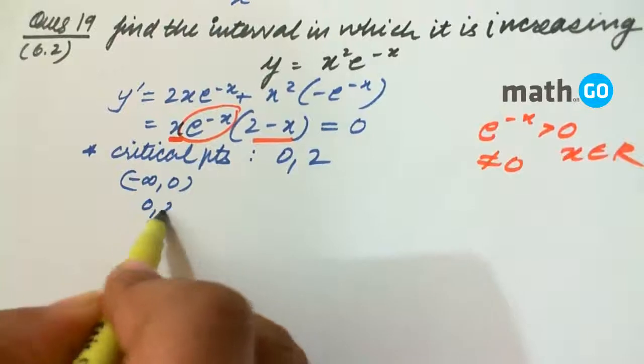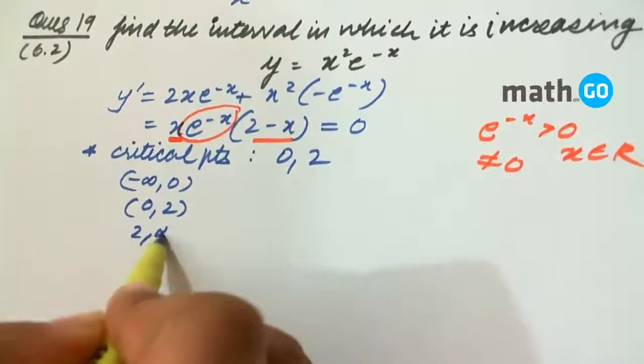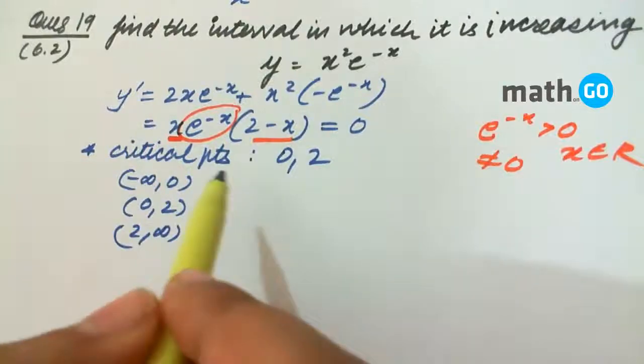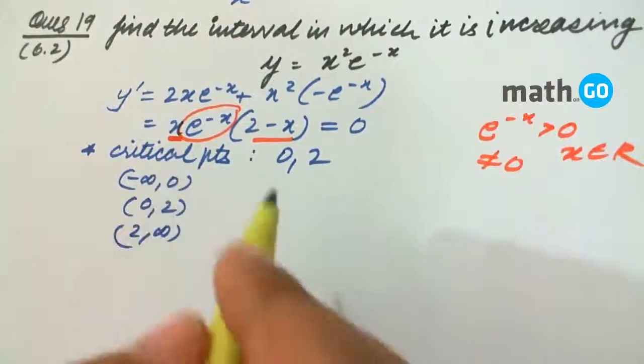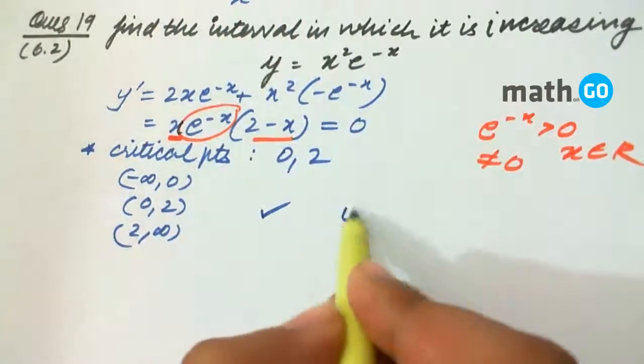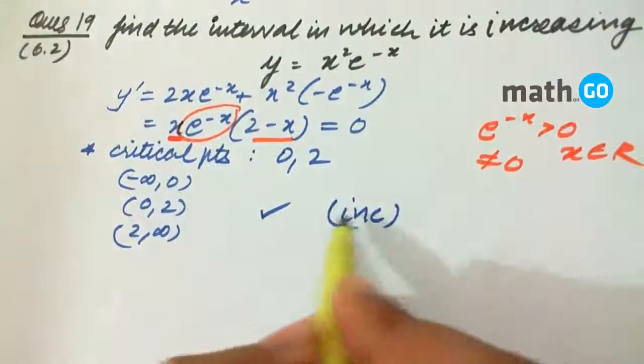If we check the sign of f'(x), it will be positive only in this interval. Therefore, it is increasing for 0 to 2.